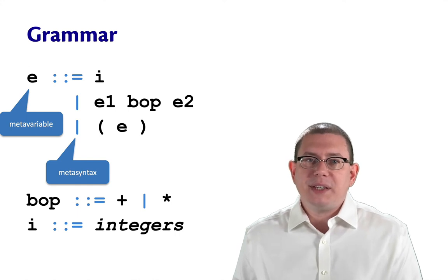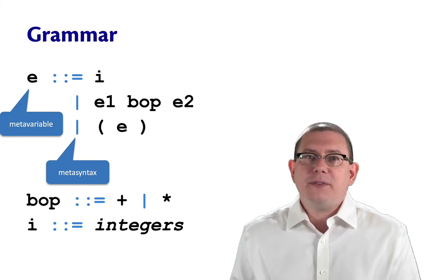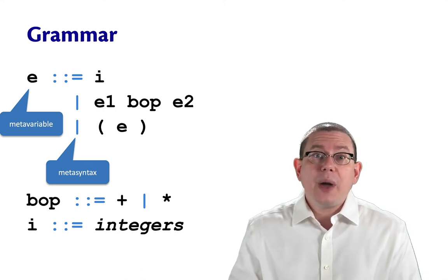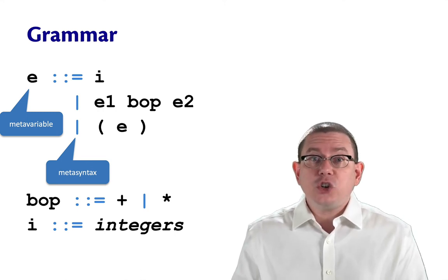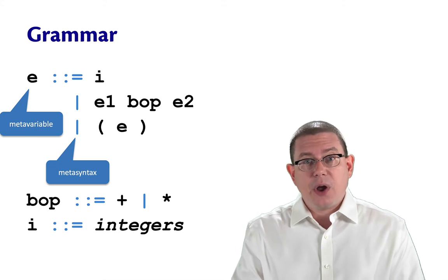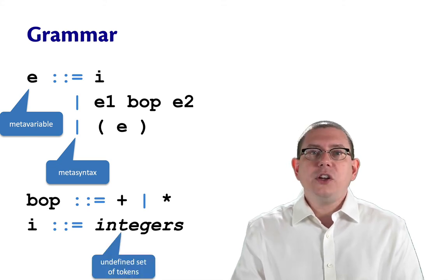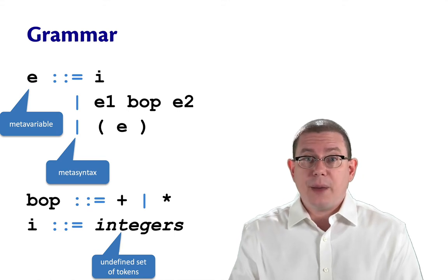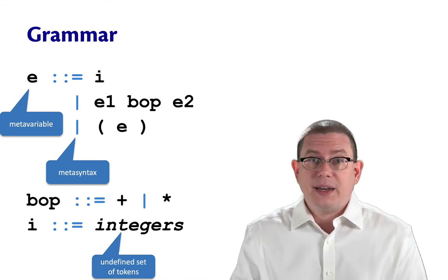In most places, intelligent readers can figure this out for themselves. We also had binary operators and integers as part of this language. Binary operators could be plus or times. Integers I'm leaving as an undefined set of tokens when I'm writing down this grammar. Of course, when I create the lexer, I need to define what that sentence.